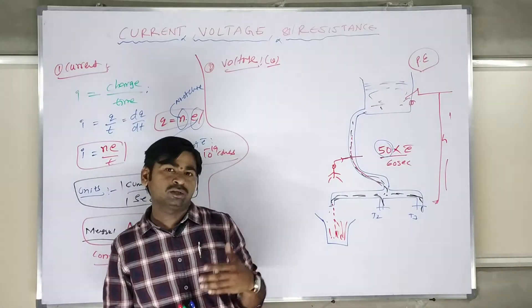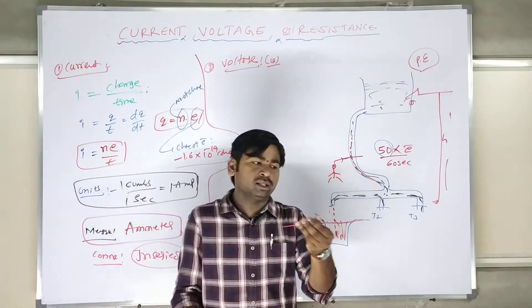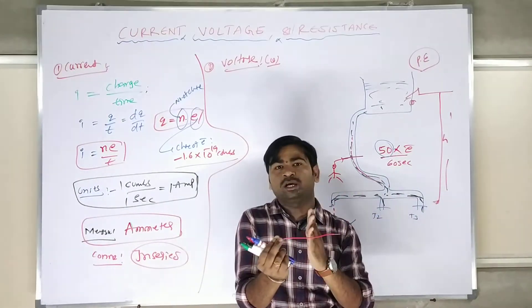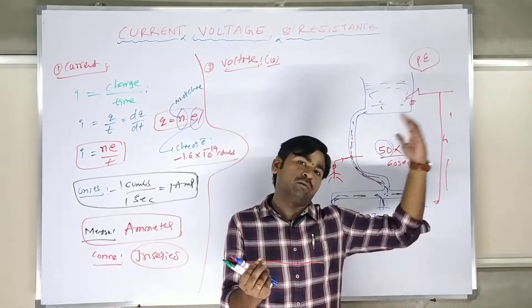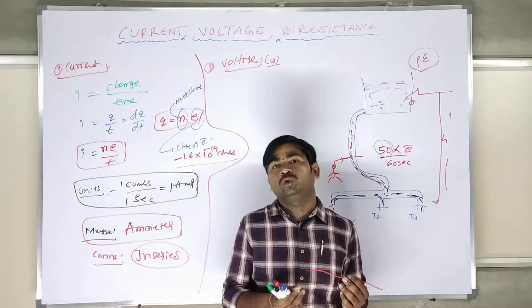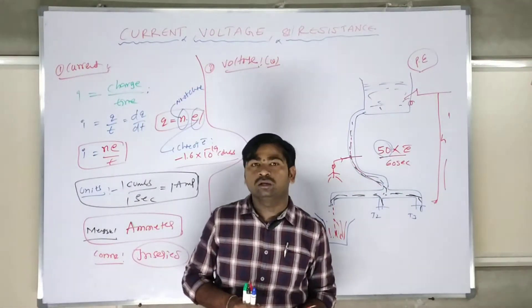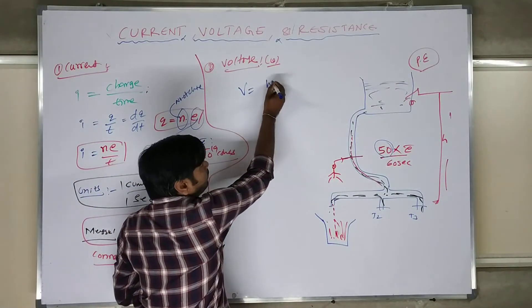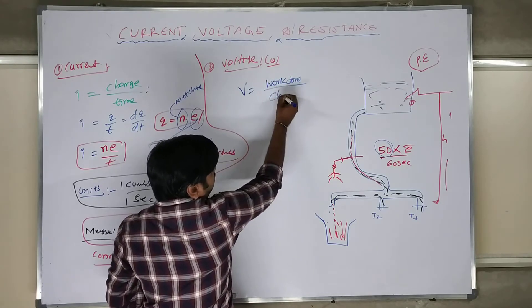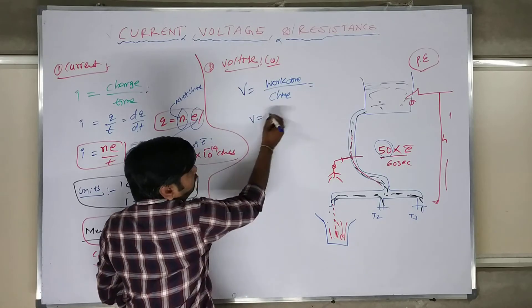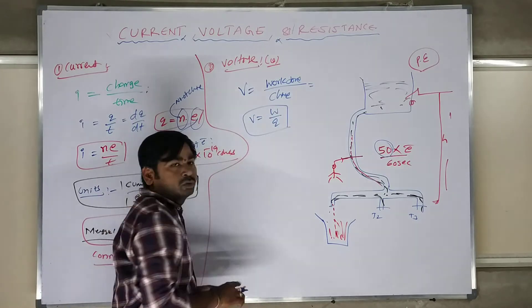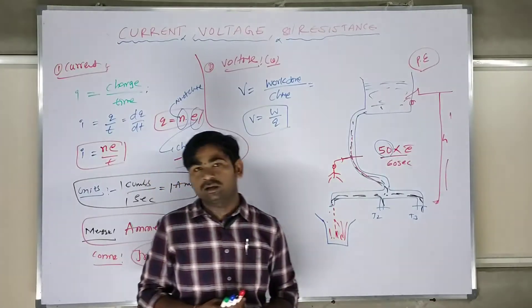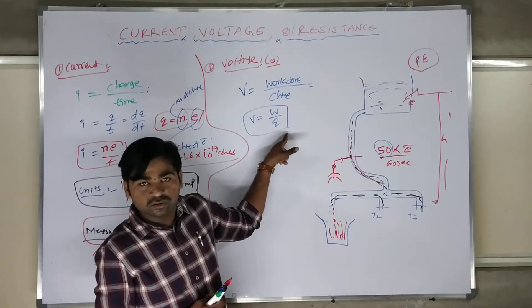So voltage is like the work done to bring a charge from one location to another. For example, if a charge is at Nagarjuna Sagar and has to come to KSP Academy, someone has to push it — some work has to be done. The work done to bring one unit of charge from one location to another is nothing but voltage. The formula is V = W/Q.